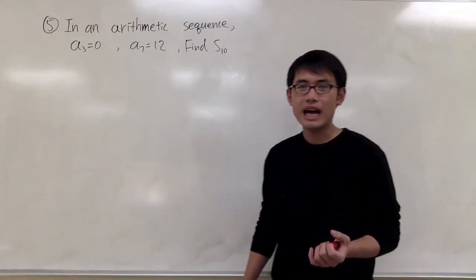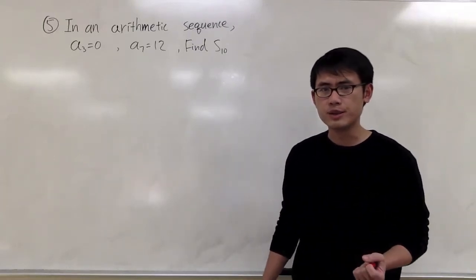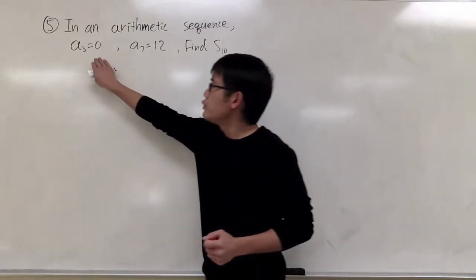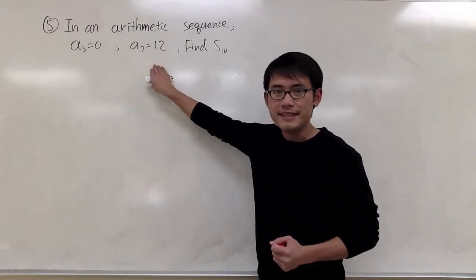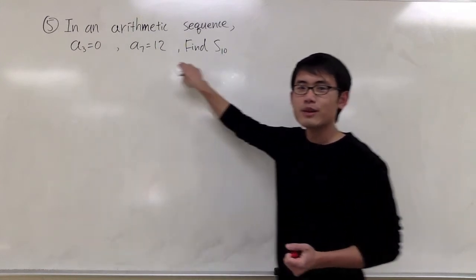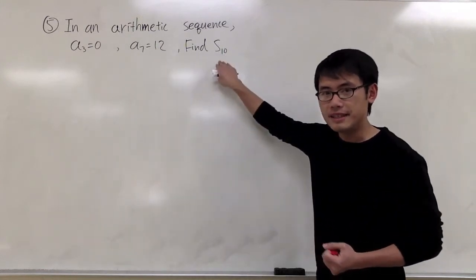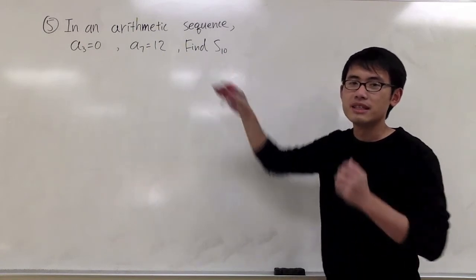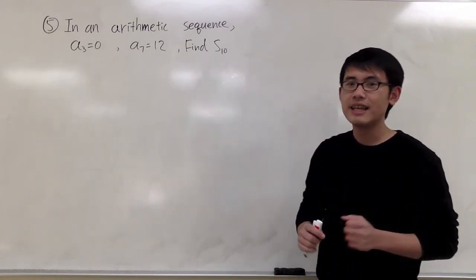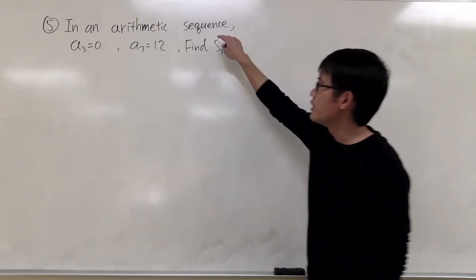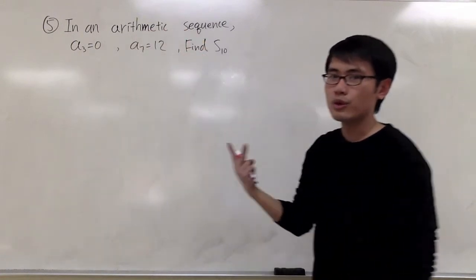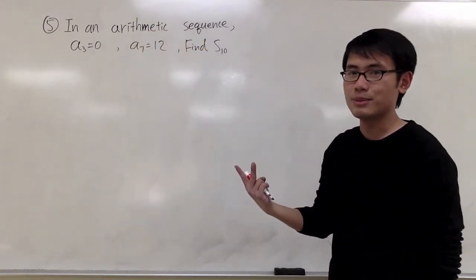For question number 5, we have an arithmetic sequence, and we know that a3 is equal to 0, a7 is equal to 12, and our goal is to find out what S10 is equal to. S10 means the sum of the first 10 terms. And since we are dealing with an arithmetic sequence, we should know two formulas to begin with.